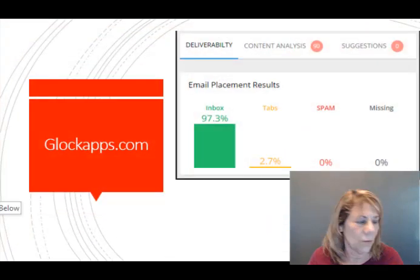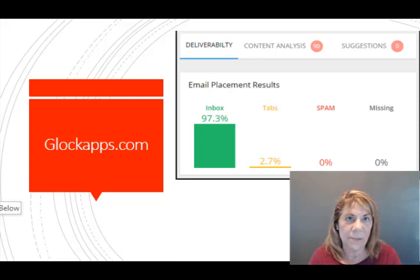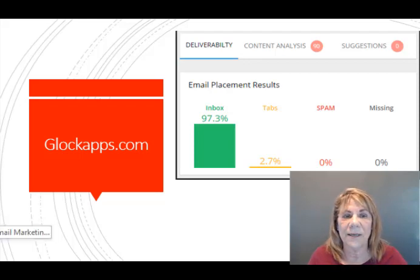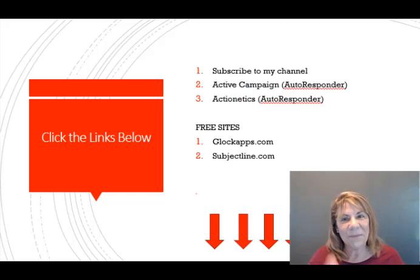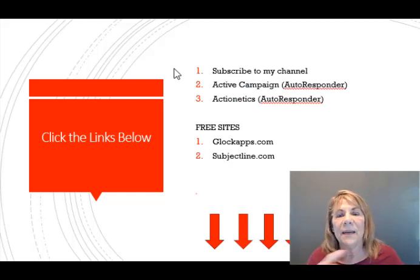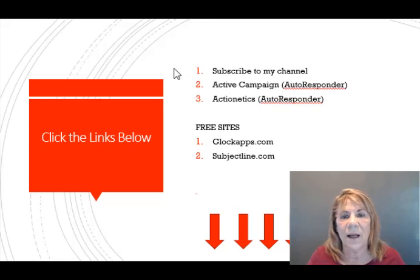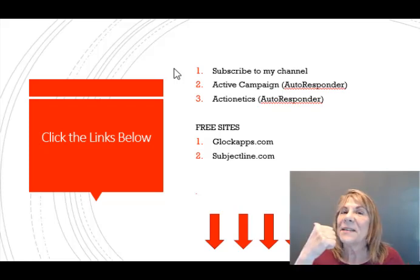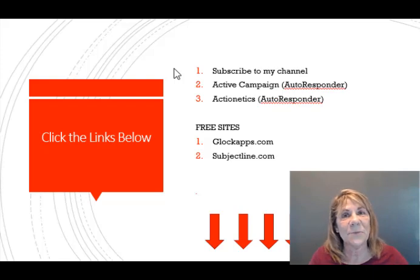So what did we just go over? We went over: one, you need an autoresponder; two, use GlockApps.com; and three, SubjectLine.com. Those are three tools that will definitely help you get started. Before you go, make sure the links for the autoresponders are below. I've also put the free sites for GlockApps and SubjectLine as well right there. Go ahead and take a snapshot so you can write those down. Subscribe to my channel, give me a thumbs up if this was helpful, and I'll see you on the next video.